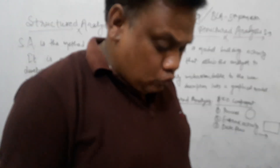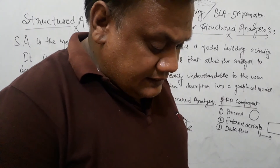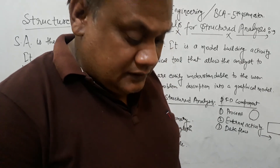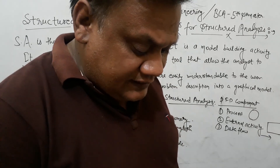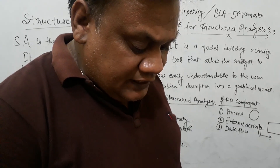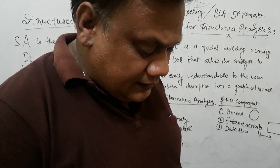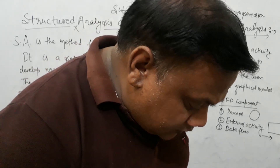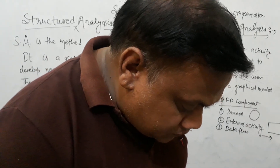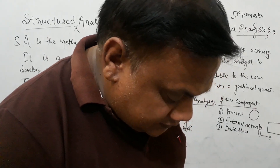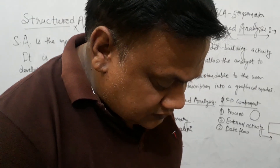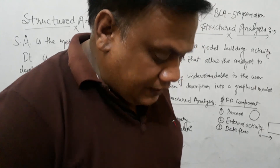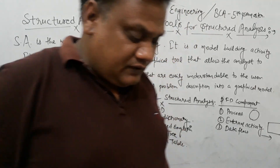An arrow is used as the data flow symbol. It identifies data in motion and represents data flow between processes, between an external entity and a process, in the direction of data flow.